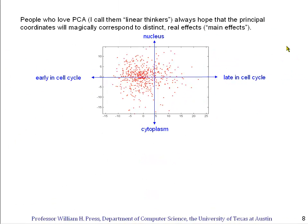Now, there are people who just love PCA, and I call them linear thinkers, and I don't mean that as a compliment. And if you're a linear thinker, you live in hope. You hope that the principal coordinates will magically correspond to distinct real physical or biological effects in your data. Here I've drawn a plot that any linear thinker would love to get out of the data.